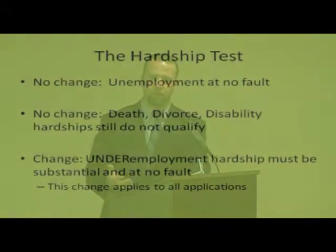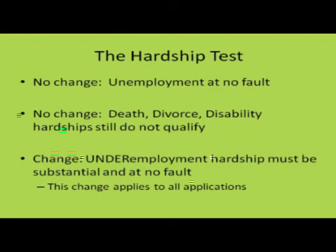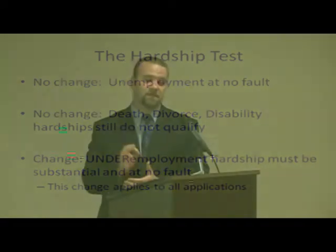There's one last change to the eligibility criteria — it deals with the hardship test. Things that have not changed: if a person is unemployed through no fault of their own, that's still a qualifying hardship. If a person has a hardship because of a death, divorce, or disability in the family, those are still not qualifying hardships. The change deals with underemployment hardships, which now must be documented as significant hardships where there's a significant reduction of income — specifically at least a 10% reduction.